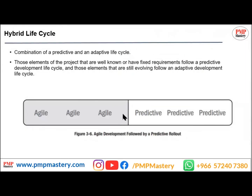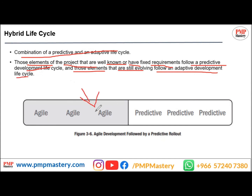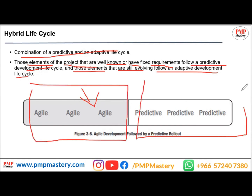The hybrid life cycle is a combination of both approaches. Elements of the project that are well known or have fixed requirements follow a predictive development life cycle, while elements that are still evolving follow an adaptive development life cycle. If any requirement may be changing, you use agile for that portion; if a phase has very clear requirements, you use the predictive approach.